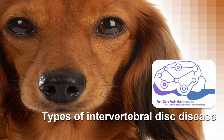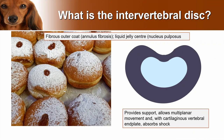The types of intervertebral disc disease we're going to be talking about are those in the dog and the cat. To understand that, first we have to know what exactly is the intervertebral disc. Like many neurologists, I describe it as being like a jammed doughnut — the outside part, the doughnut, is a fibrous outer coat called the annulus fibrosus, and then there's a liquid jelly centre which is the nucleus pulposus. The disc functions to provide support to the whole skeletal column, allows movement in any direction, and with the cartilaginous vertebral end plates — which are like shock absorbers at the end of the vertebrae — they allow absorption of shock.